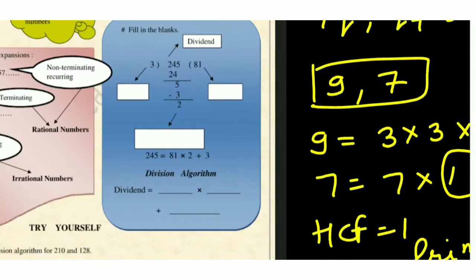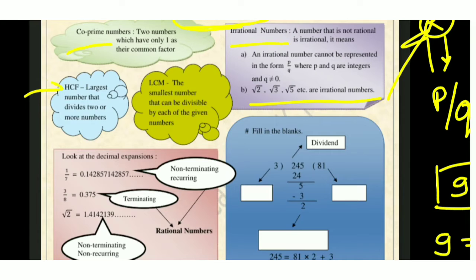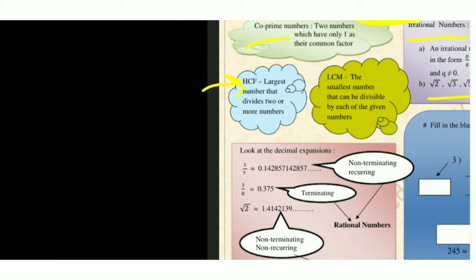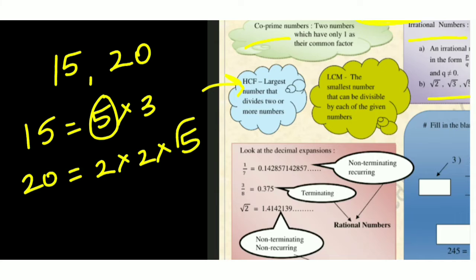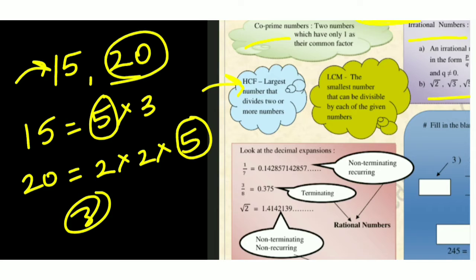HCF is the largest number that divides two or more numbers. For example, take 15 and 20. Factors of 15 are 5×3, and factors of 20 are 2×2×5. The common number is 5, which is also the largest common factor. 15÷5 = 3 and 20÷5 = 4, so 5 divides both completely. Therefore, HCF is 5.